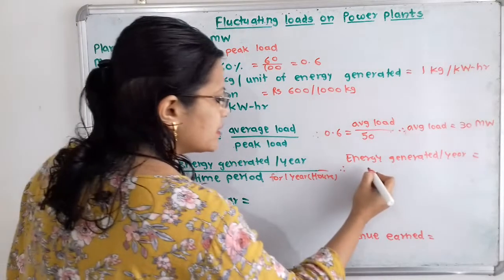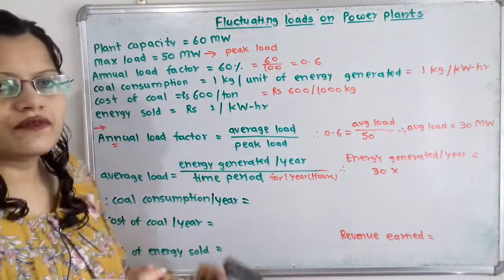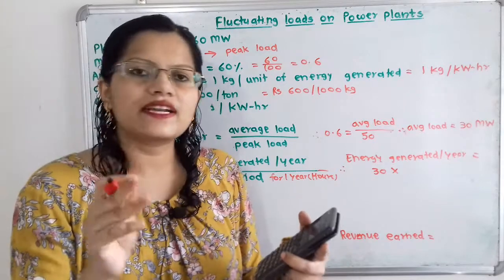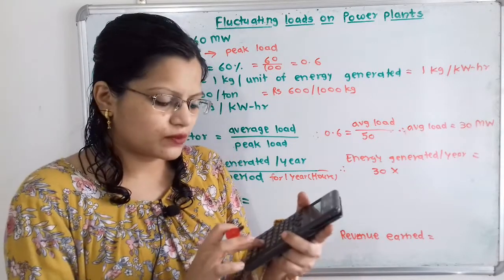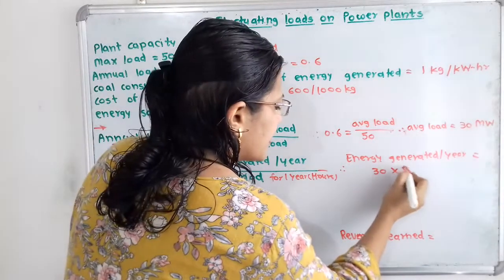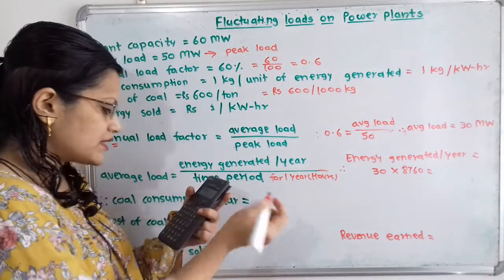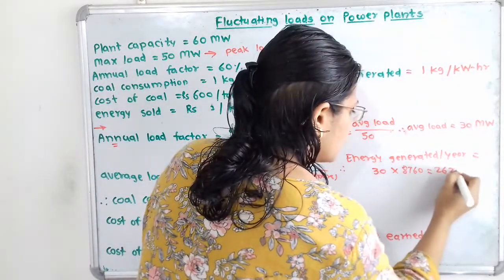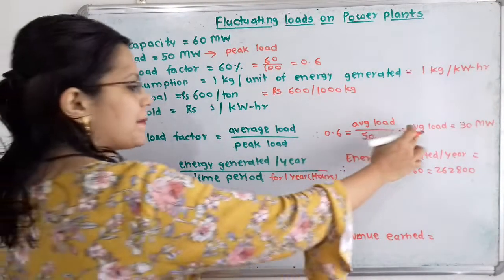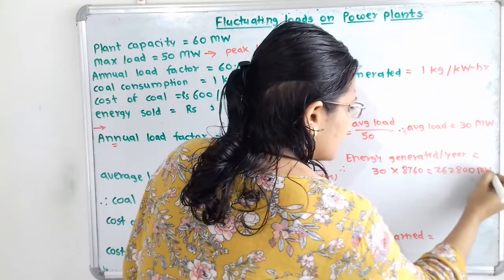Average load is 30 megawatt, multiplied by time period for one year: 365 days multiplied by 24 hours, which is 8760 hours. So energy generated equals 30 multiplied by 8760, that is 262,800 megawatt hours.